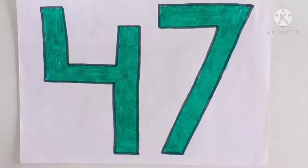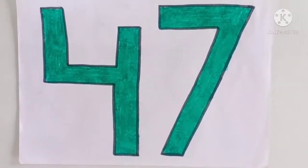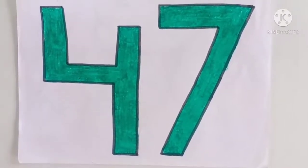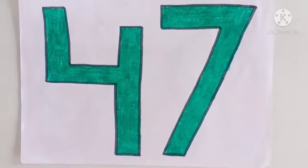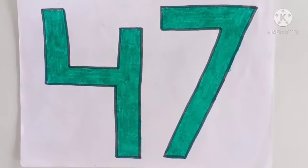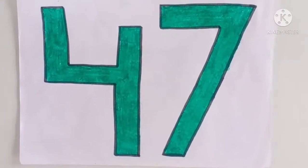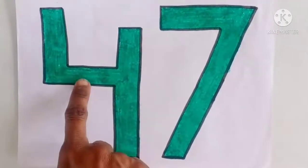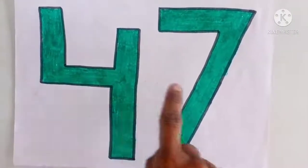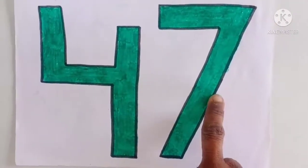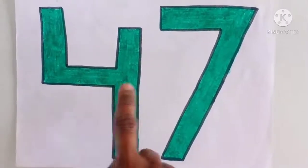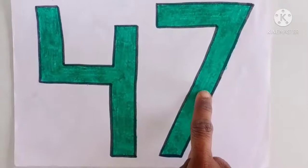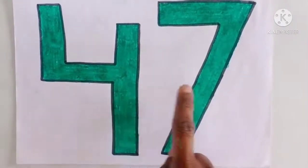Now can you tell me again: how many tens and how many ones are there in this number? Tell me, children! Yes, very good — there are four tens and seven ones. Four tens and seven ones — forty-seven.